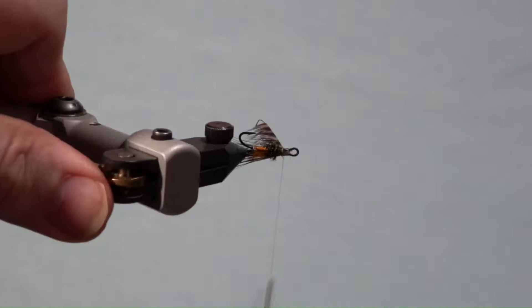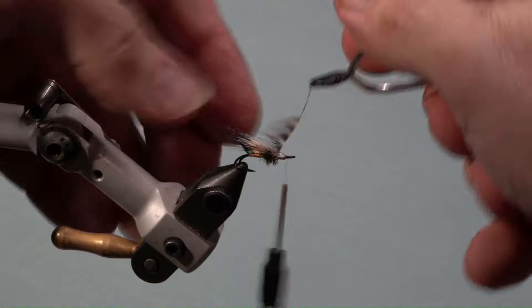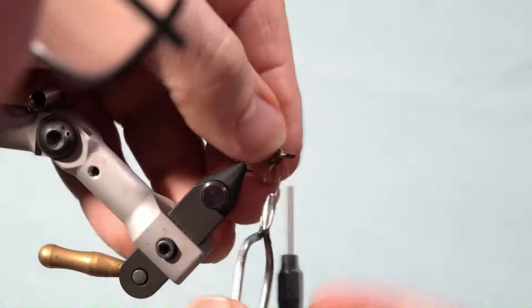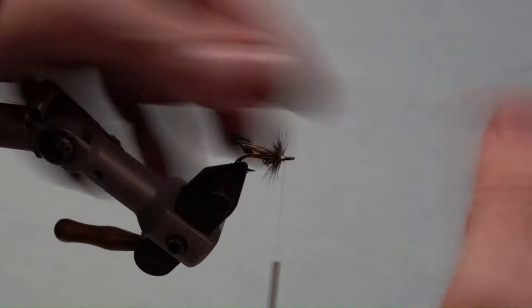Next, take a hen grizzly hackle, fold it, and tie it in by the tip underneath the hook. Attach a hackle plier to the stem and wrap it edge-to-edge as a collar going forward and secure it by the stem and trim the excess.